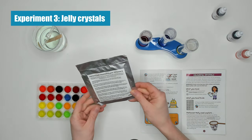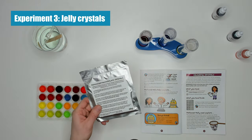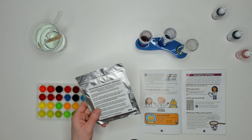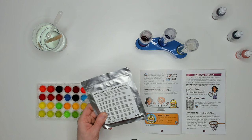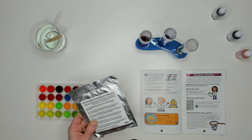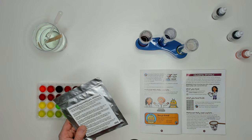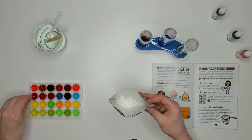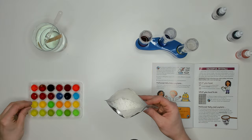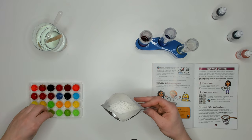Experiment three creates jelly crystals. We're going to be using the polyacrylate crystals in this experiment. Polyacrylate crystals are super absorbers and they can soak up to 300 times their own weight in water. We need to take crystals from the sachet and add one to each of the compartments in the color mixing tray. Then we leave for one hour.